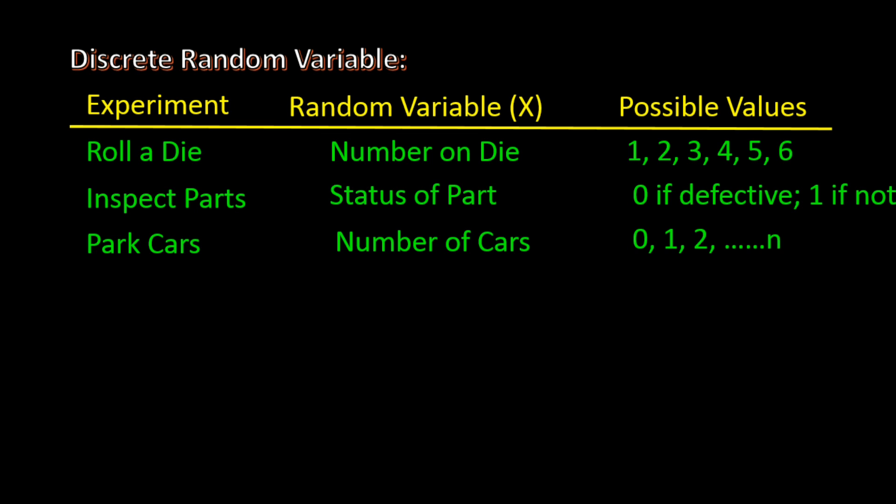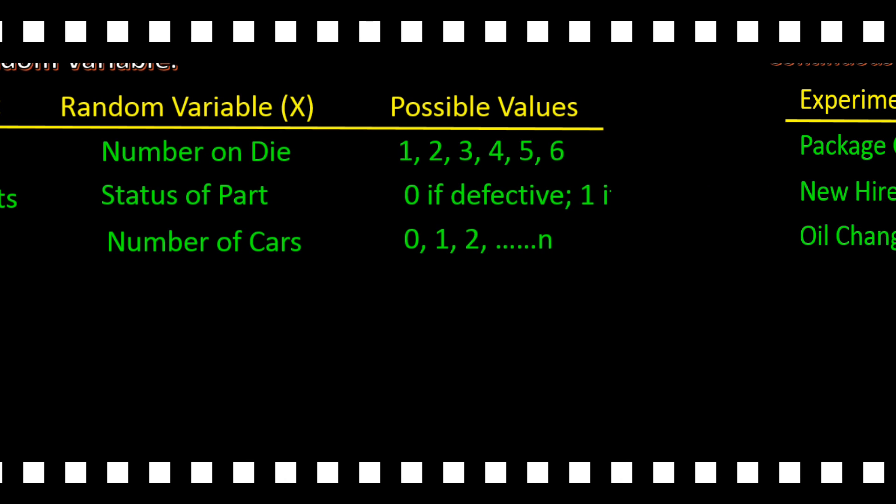We can look at the cars that are parked in our lot on a given day and count them, so that the random variable x would be the number of cars in the lot. The possible values would be 0, 1, 2, 3, and so on — theoretically an infinite sequence of numbers, but it is still discrete since there are no fractions of a car.